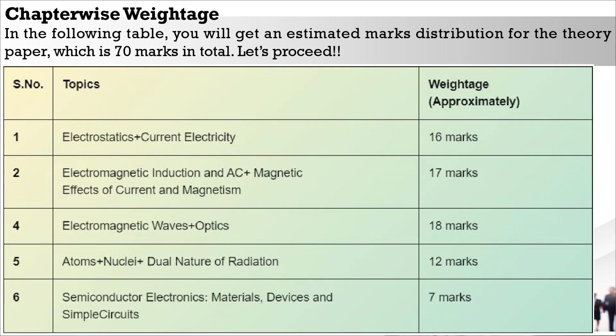Let us see the estimated marks distribution for the theory paper, which is 70 marks in total. Unit electrostatics and current electricity both carry a weightage of 16 marks. Electromagnetic induction, AC, and magnetic effect of current and magnetism carry 17 marks. Electromagnetic waves and optics carry 18 marks. Atoms, nuclei, and dual nature of radiation carry 12 marks. And lastly, semiconductors carry 7 marks.